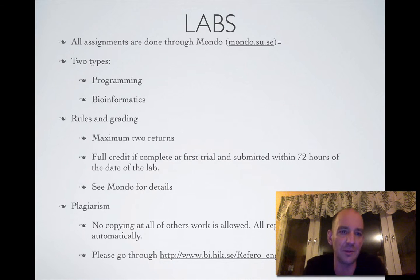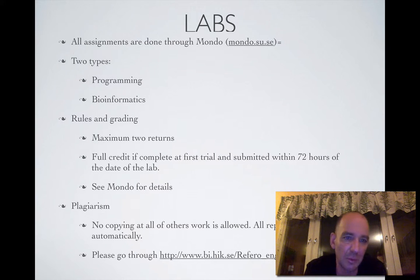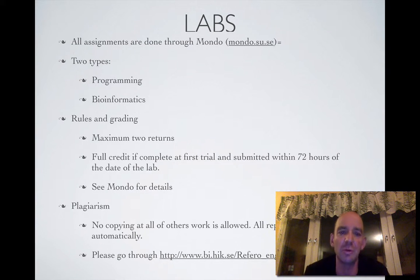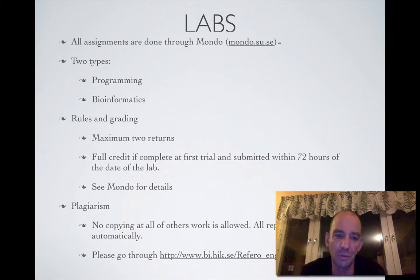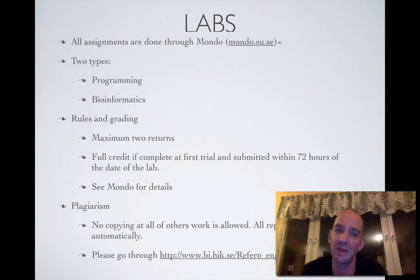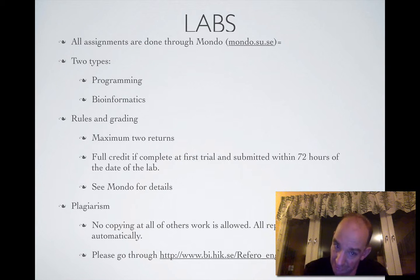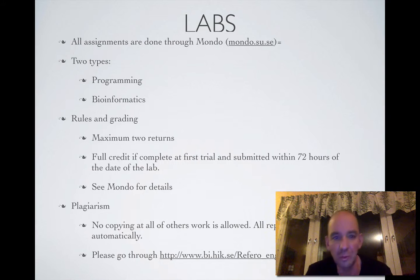The second part of the course is the labs. All assignments are done through Mondo. There are two types: programming labs and bioinformatics labs — done in similar ways but covering different material. You are only allowed two returns on each lab; if you have to return a third time you will have to retake the lab next time the course is given, which is next year. If you submit a complete report within 72 hours of the lab you will get full credits; later submissions or resubmissions will result in fewer credits, and these credits count toward the final grade.